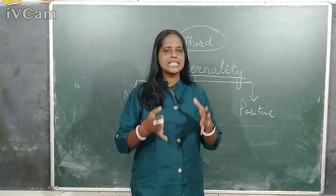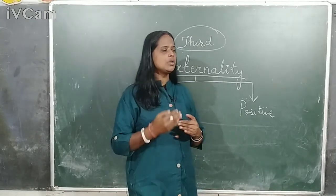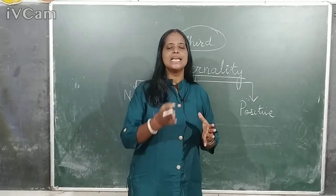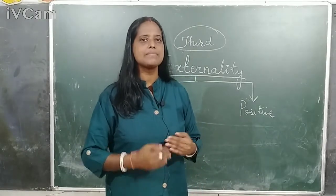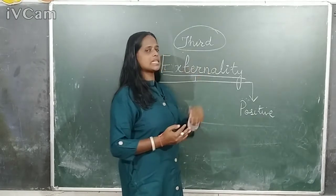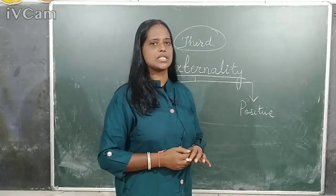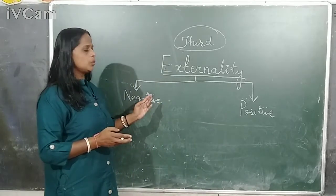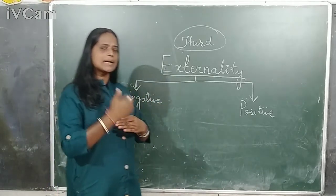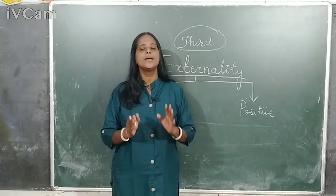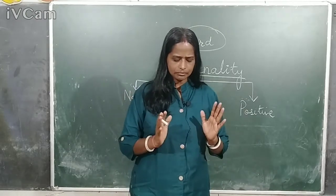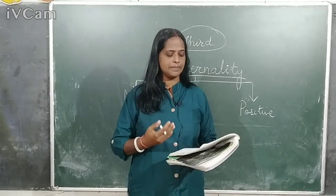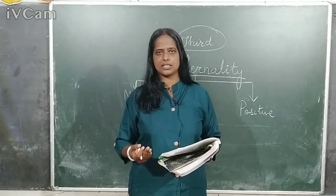To summarize: externality occurs whenever there is trade or a transaction between two parties — the buyer and the seller — and unknowingly a third party gets involved. That third party may suffer badly, which is called negative externality, or the third party may benefit, which is called positive externality. In my next lecture I will be discussing another very important topic, that is cost-benefit analysis. Thank you, class.